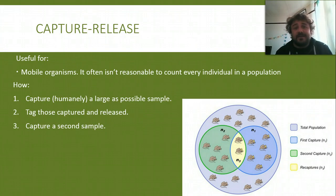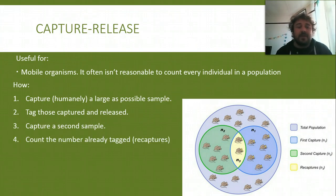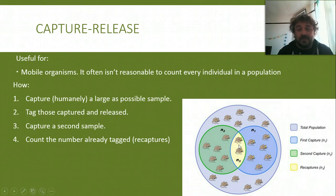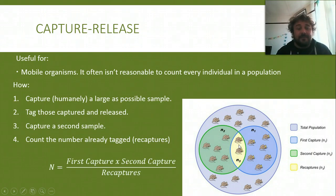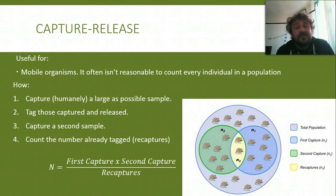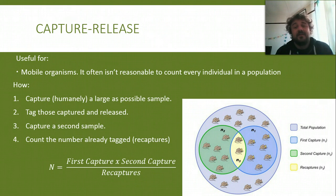You want to capture a second sample — this is important. You want to count the number already tagged, and we call those recaptures. Then you use this formula: the first capture times the second capture, divided by recaptures. That tells you roughly how many you have.